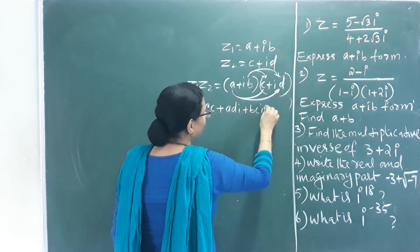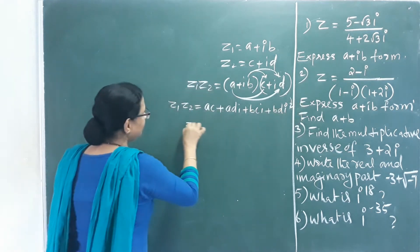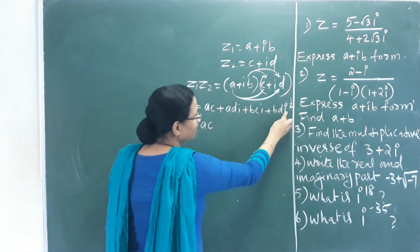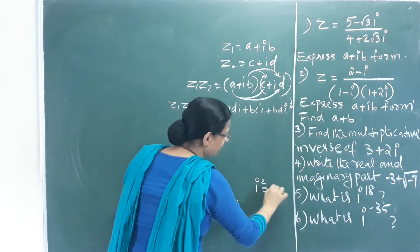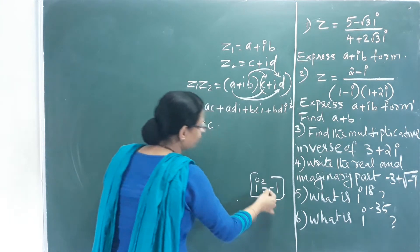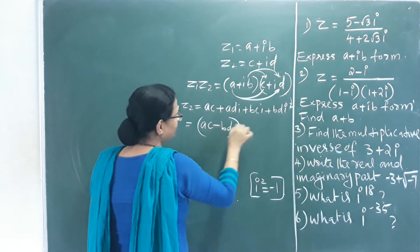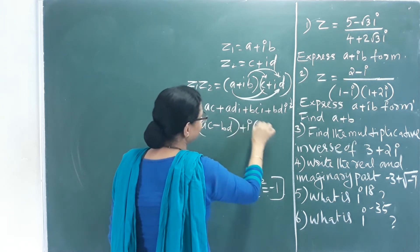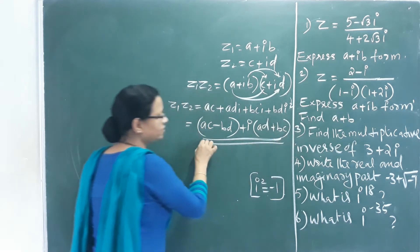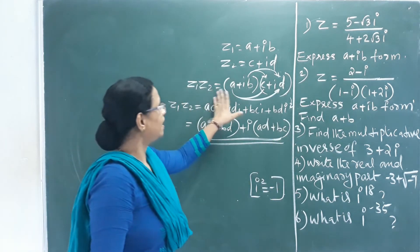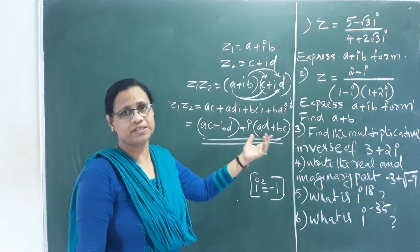Since i² = -1, the term bdi² becomes -bd. So Z₁ × Z₂ = (ac - bd) + (ad + bc)i. This is the formula for multiplication of two complex numbers.